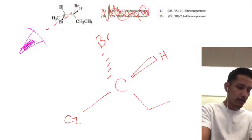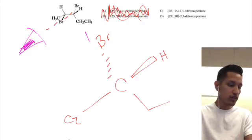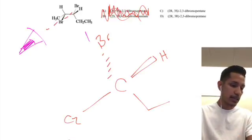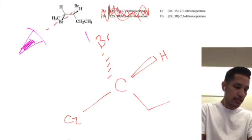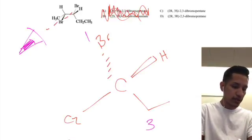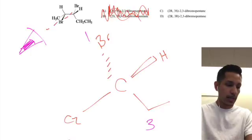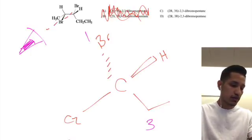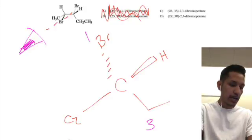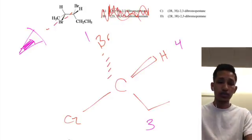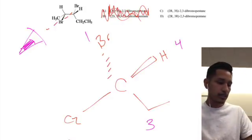We've got bromine as one. C2 would be our second priority because it's attached to a bromine, methyl, and a hydrogen. And then the ethyl group is our third priority because it's attached to a carbon and then two hydrogens, which is less than the bromine and the methyl group. And lastly, we've got the hydrogen as number four.